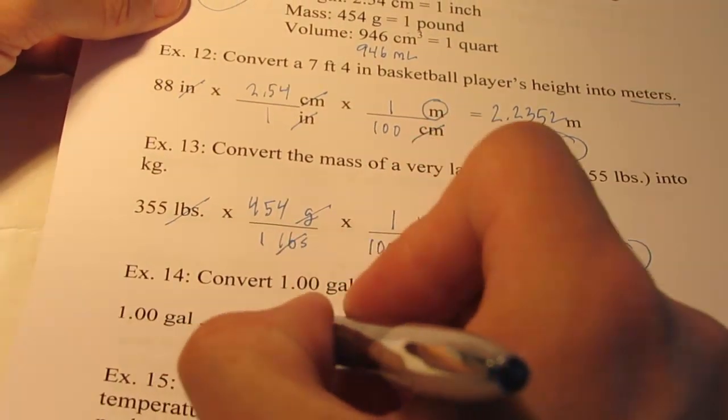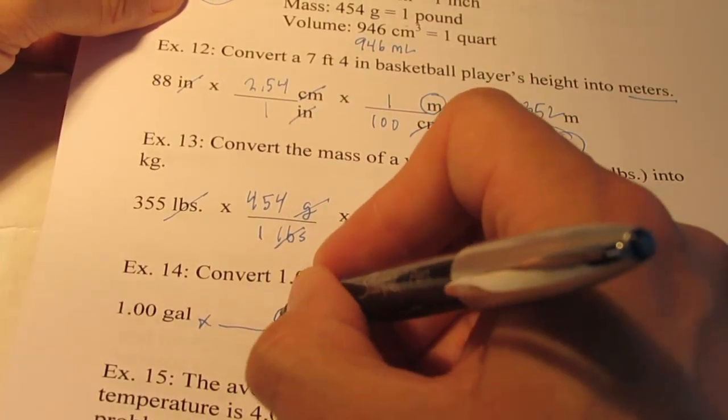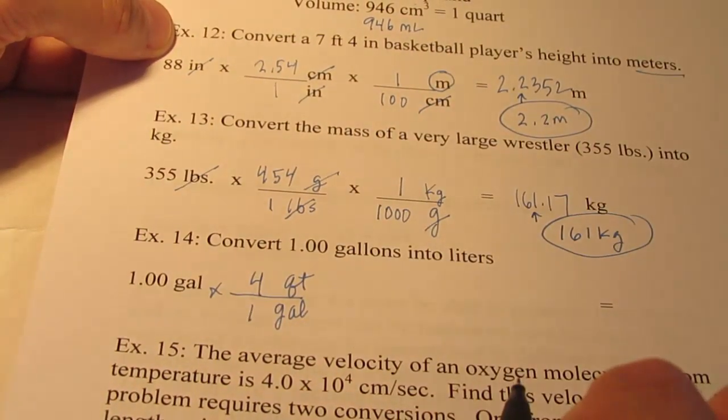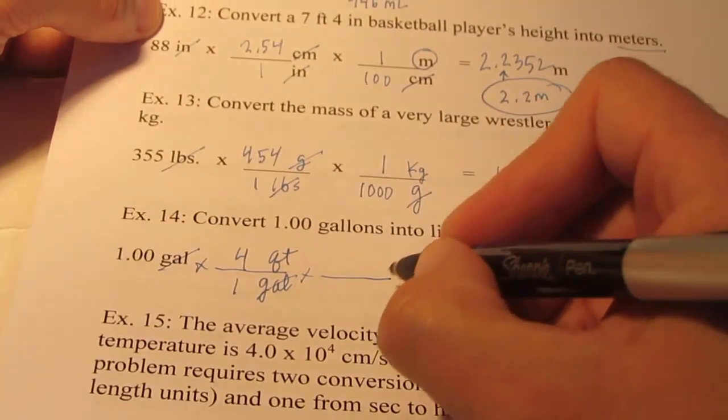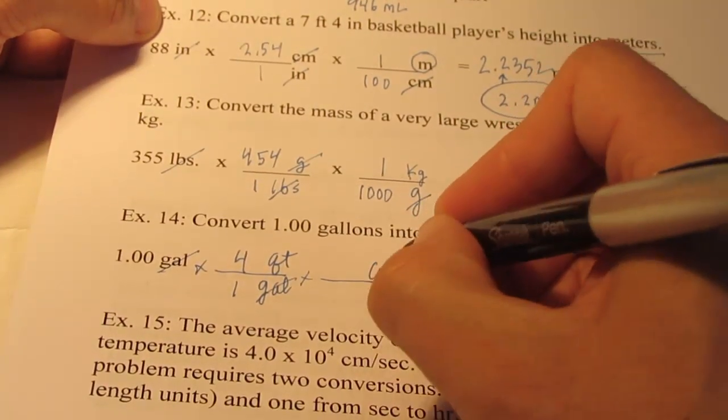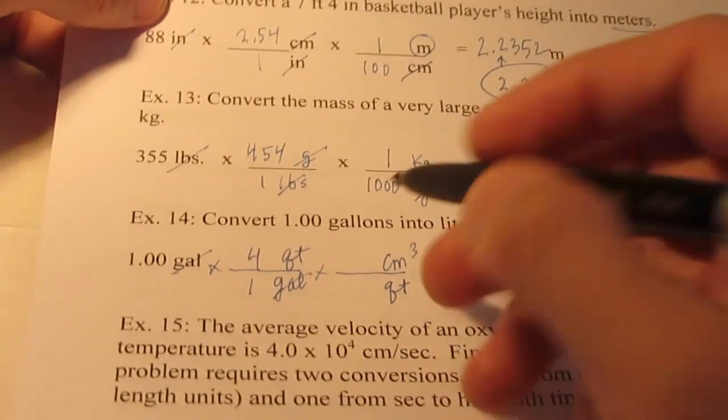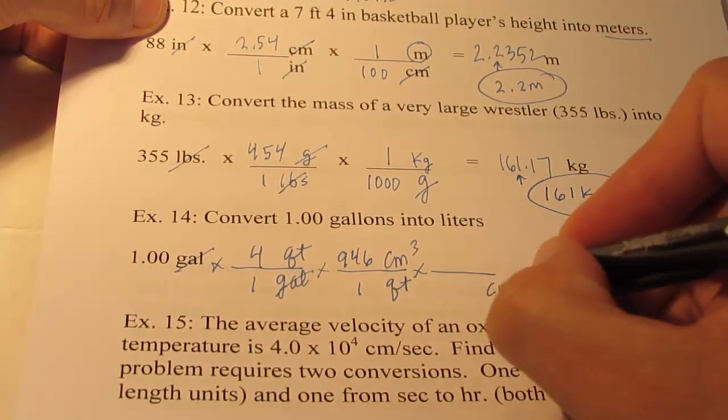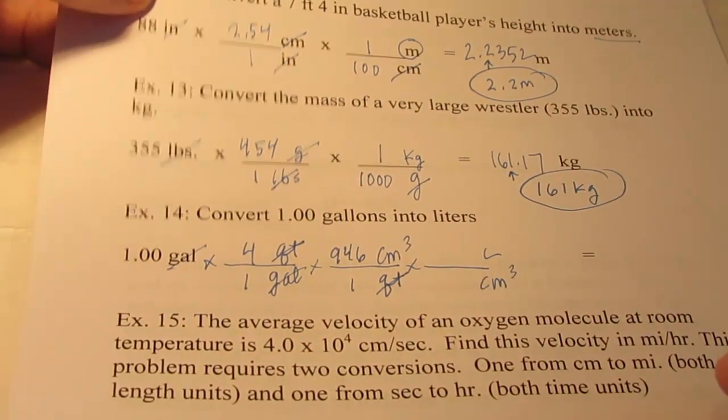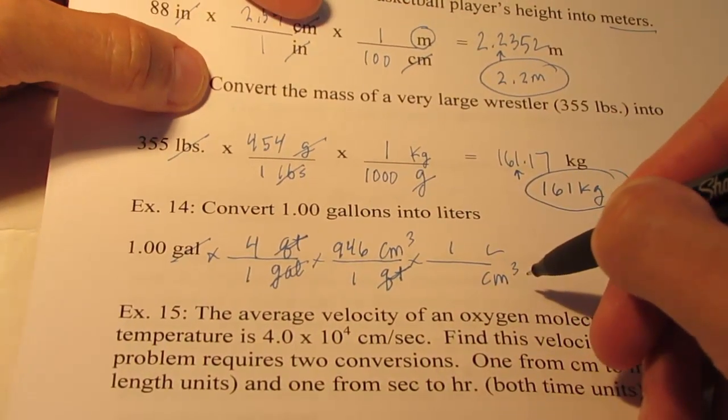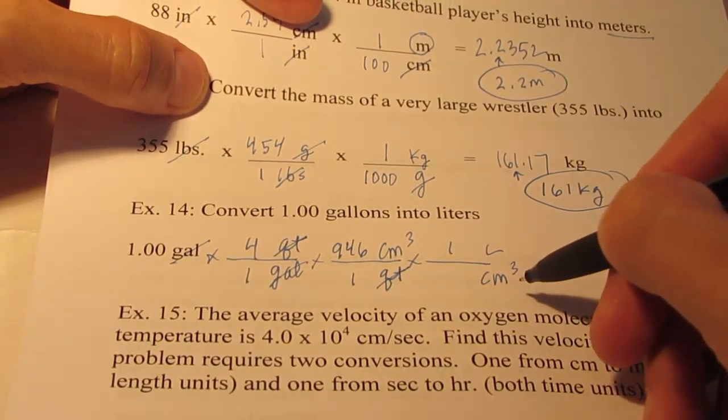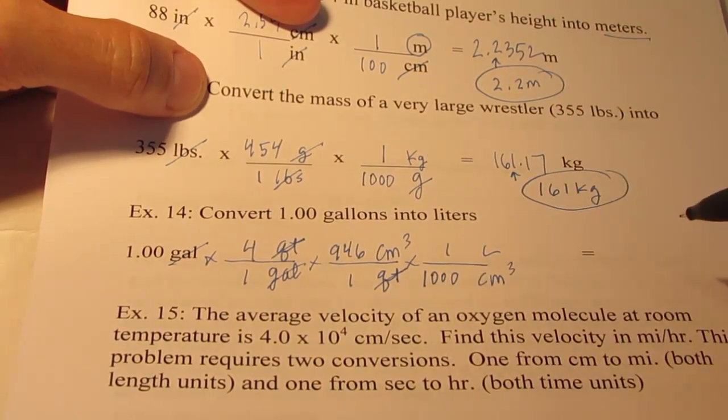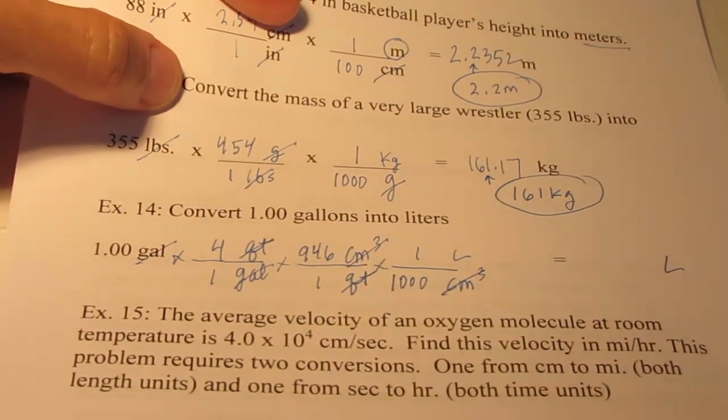So on this problem I want to go from gallons to quarts first. And hopefully we know that in a gallon there are four quarts. And then we can go from quarts to cubic centimeters, and one quart is the same as 946 cubic centimeters. And then we can go from cubic centimeters to liters. So one liter has how many cubic centimeters? One liter is the same as a thousand cubic centimeters. And so this will give us our answer in liters.